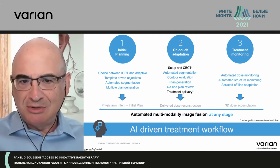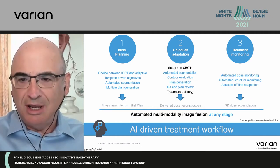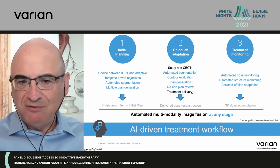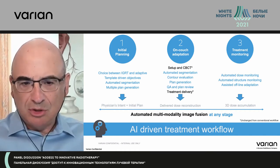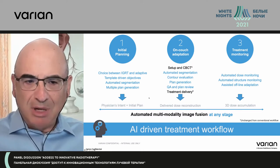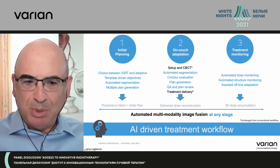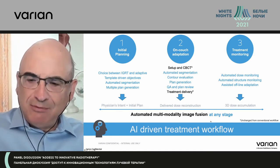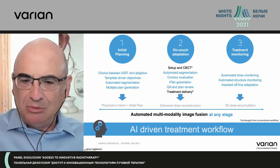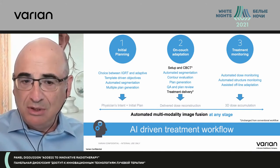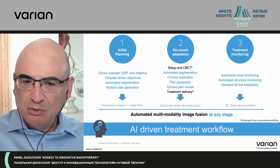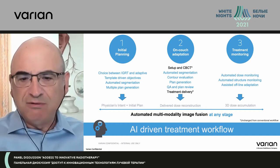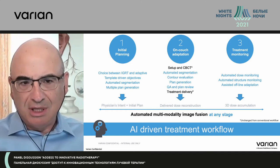The setup and cone beam CT treatment delivery in black is what we do today. Everything in blue is added as functionality on the Ethos machine. At the bottom it says automated multimodality image fusion. The platform also allows at any point in time to bring in any kind of imaging you have on the patient, even new imaging, and then fuse it with the cone beam of the day and act on it. All of this workflow is assisted by artificial intelligence.